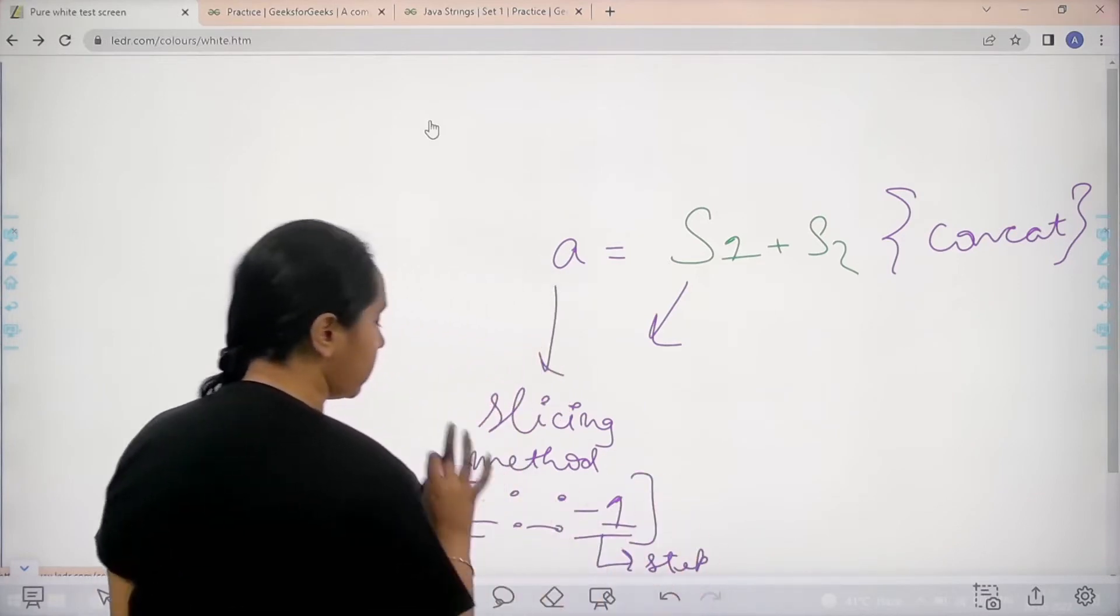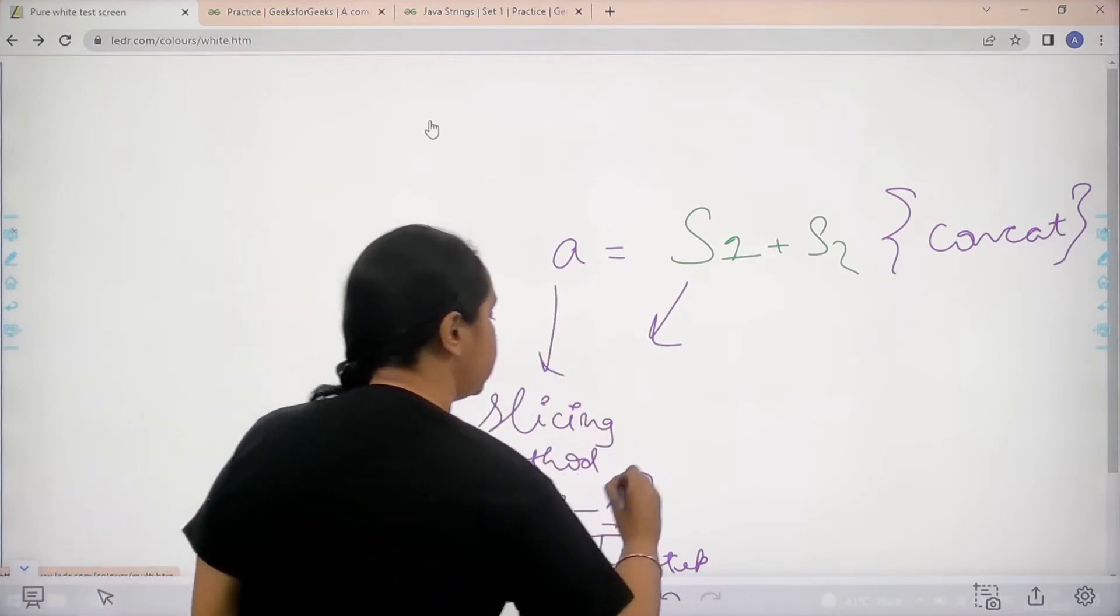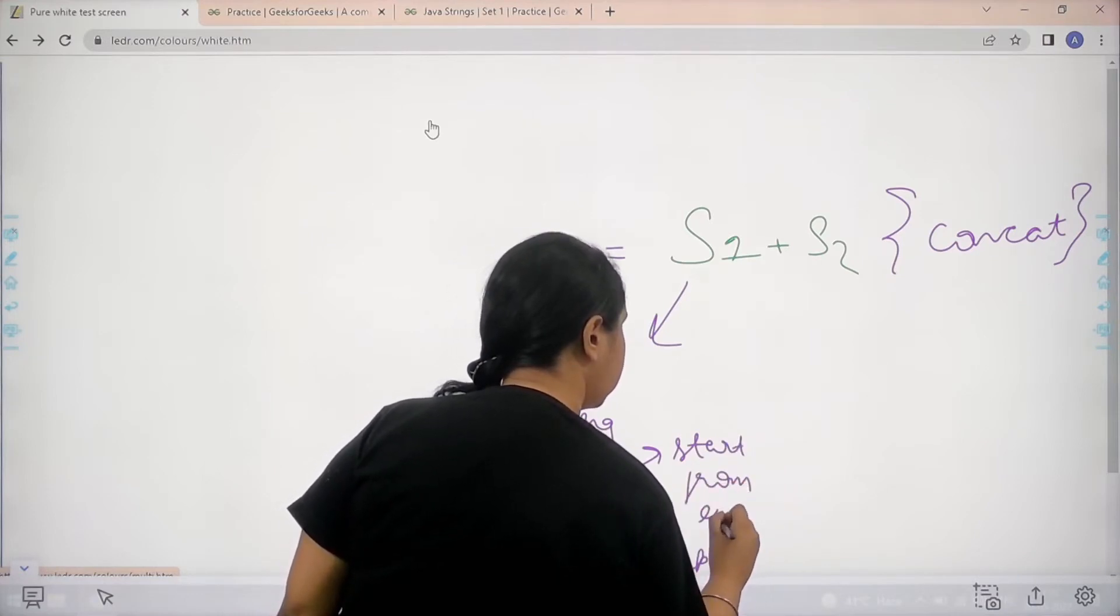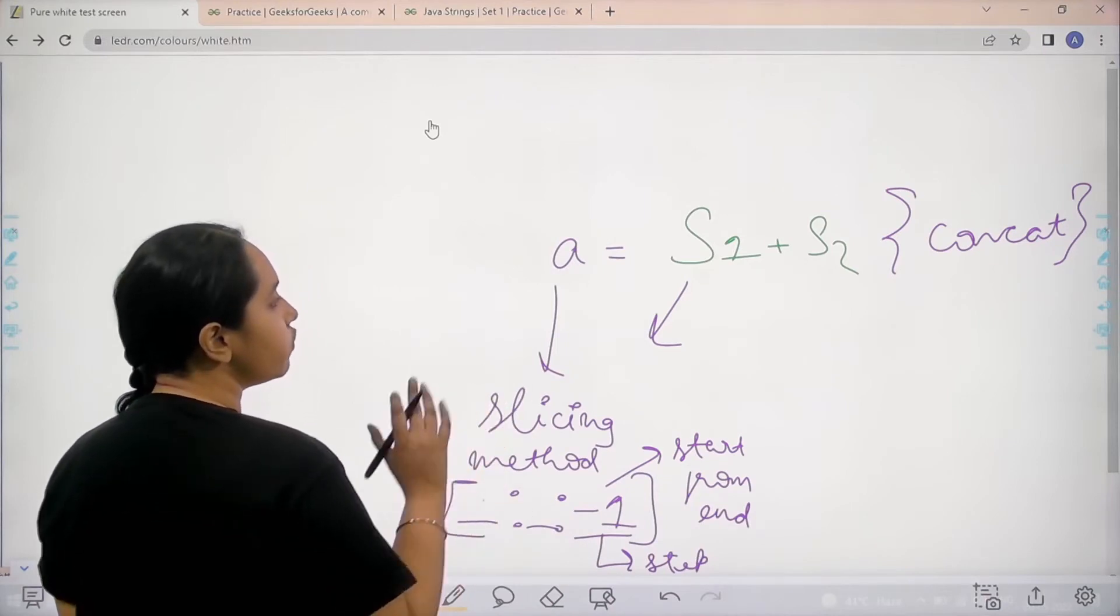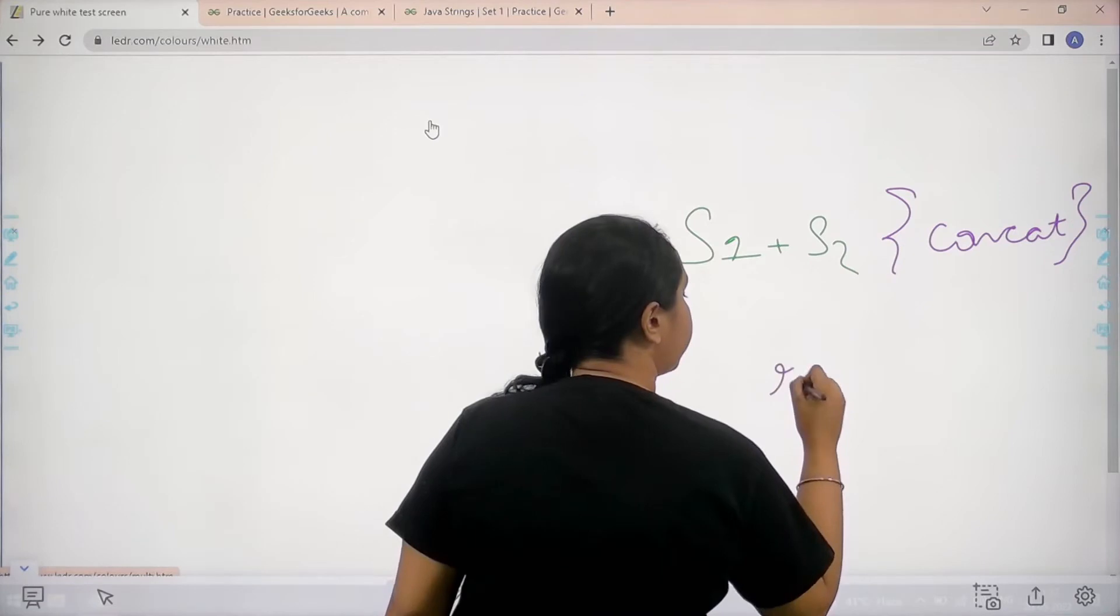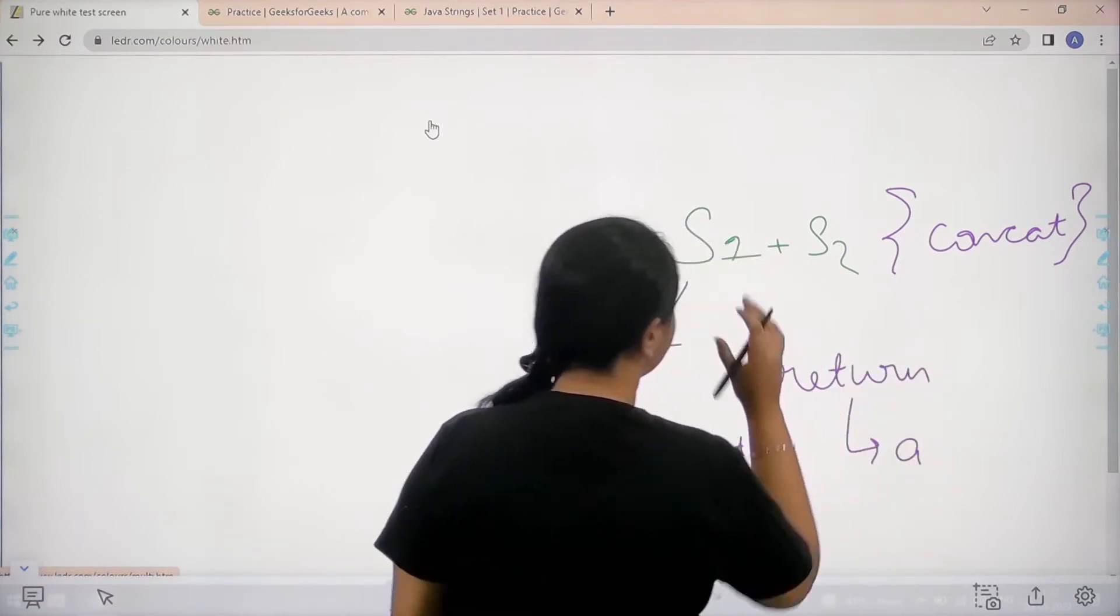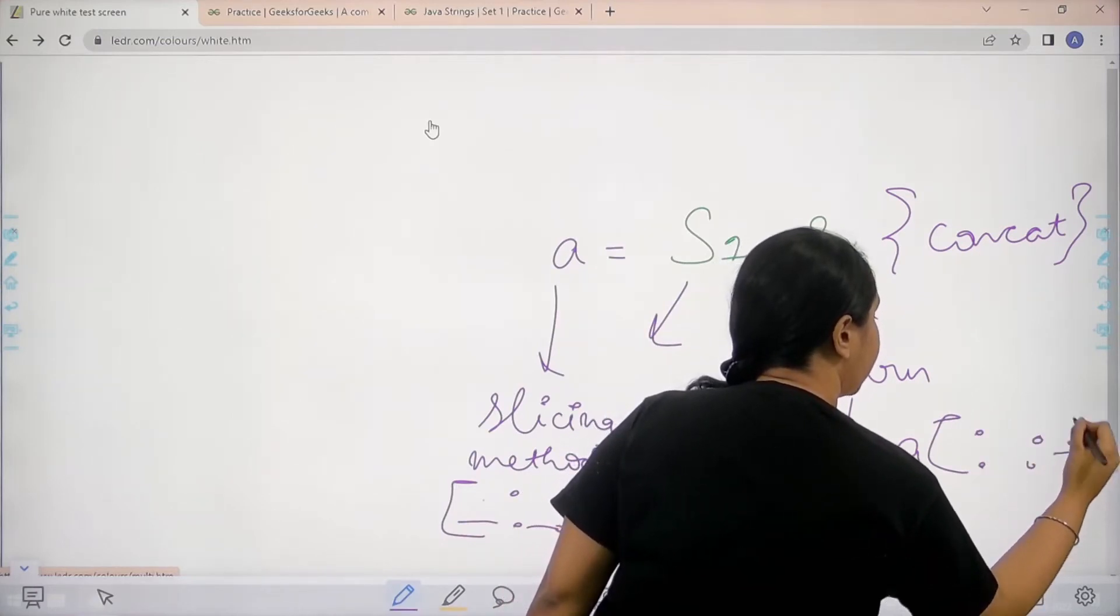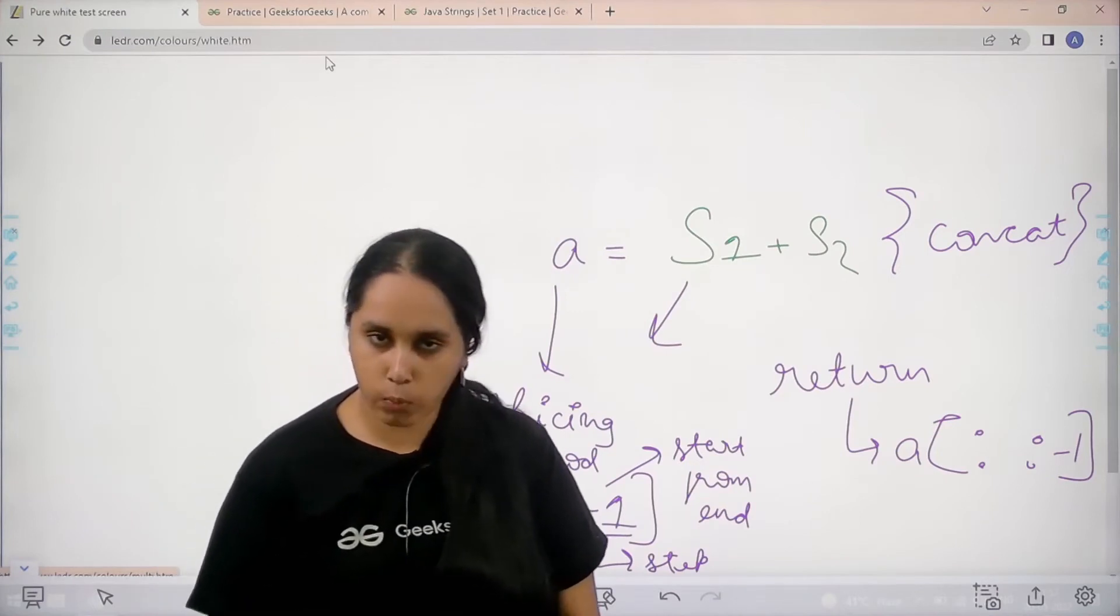So this means there is no start, there is no end but the step size minus 1 means start from end, and you need to finish in the start. So we would use slicing method on this a string. So basically I would directly return with a that is the new string then colon colon minus 1. So using this concept, I would solve my question.